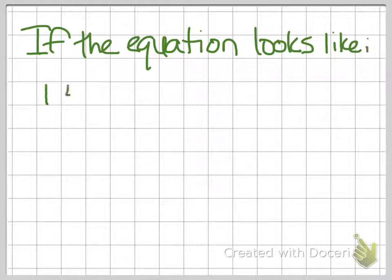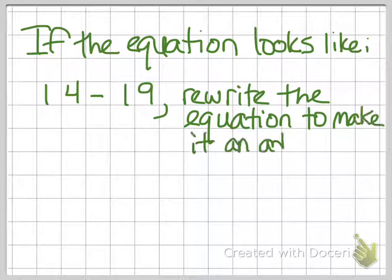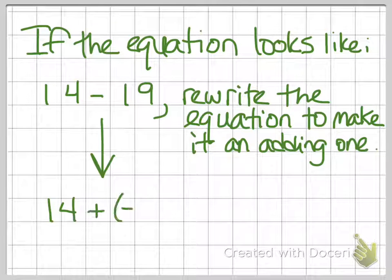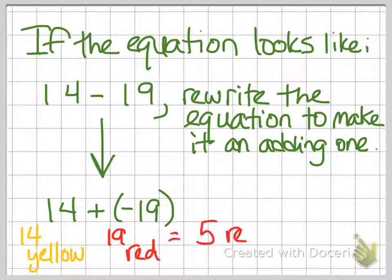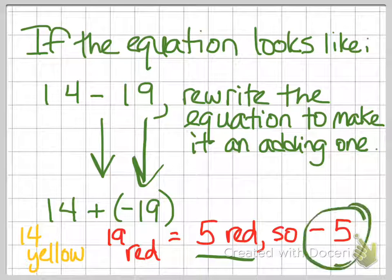If the equation looks like 14 minus 19, rewrite the equation to make it an addition question. That's done by changing the value of the second number into a negative. So instead of saying 14 minus 19, now you have 14 plus negative 19. Same application we looked at before, 14 of those tiles get canceled out. We're left with 5 red ones, which gives us an answer of negative 5. Subtracting positives is the same as adding negatives. It is the same operation.